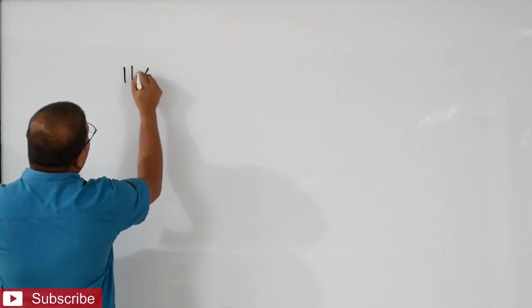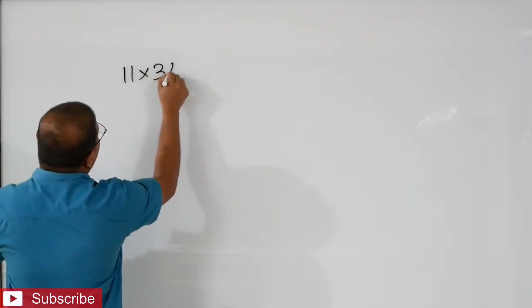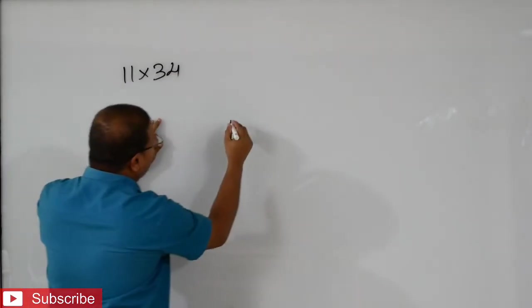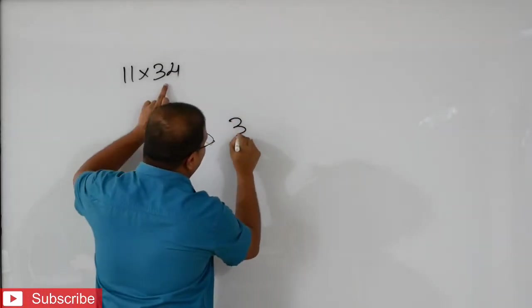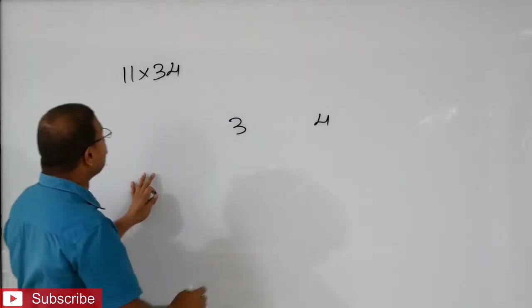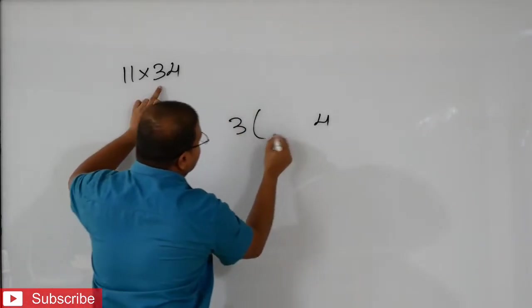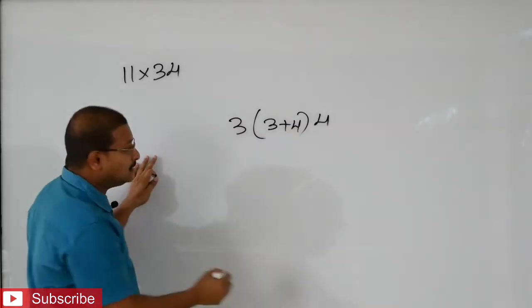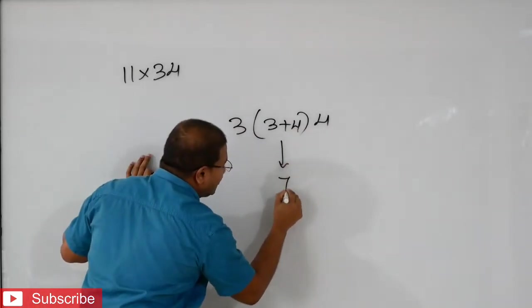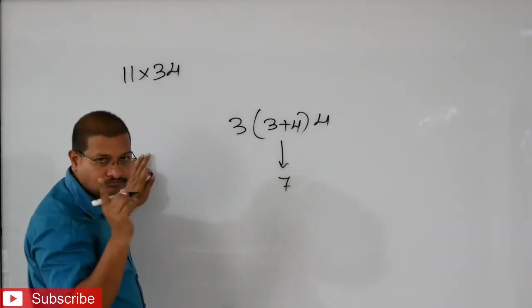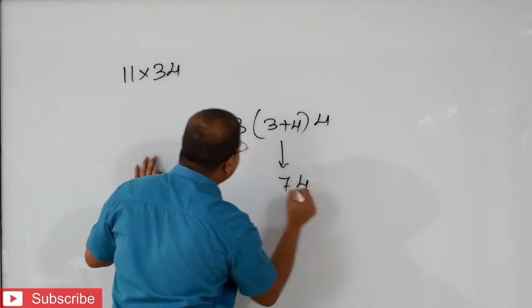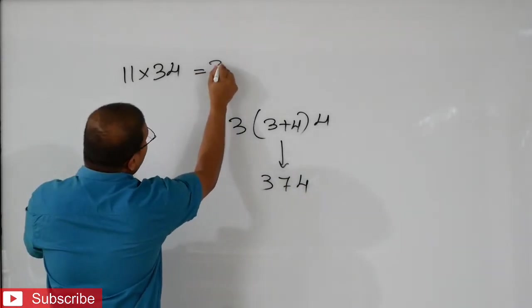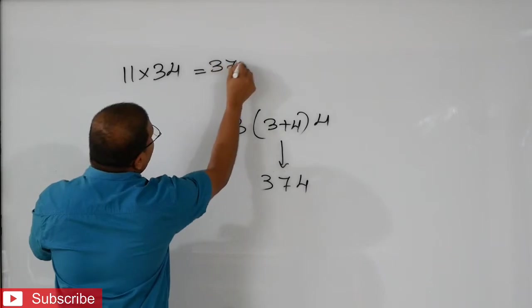Just see that 11 into 34. If I want to multiply 11 into 34, what we will do? First we will write 3, 4. After that, these two will add. See, 3 plus 4 — this will write in the middle. That means 3 plus 4, that is 7. After that, this 4 will write and this 3 will write here. That means you will get 3, 7, 4.